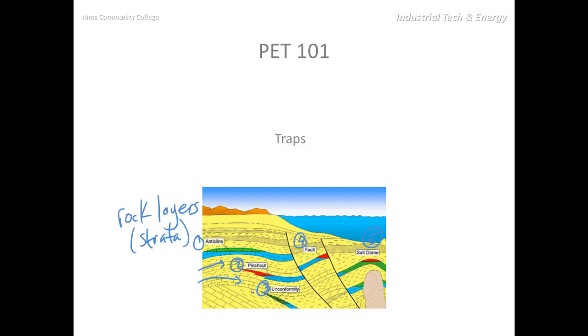An unconformity simply means that this rock and this rock were so dissimilar that they weren't able to meld together due to pressure and heat, and so we ended up with a void here.